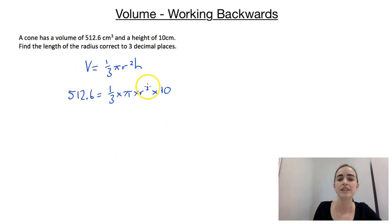So we need to rearrange this first to get the r² on its own, and then we can just get r on its own. So again, there's a couple of different ways you could approach it. I'm going to multiply by three first. So I'd have 512.6 times 3. And that'll get rid of that third. And then I'm just going to rearrange these ones as well. So I'm going to write 10 times π times r².